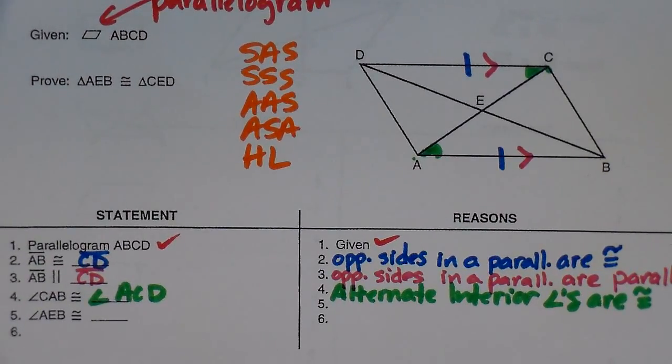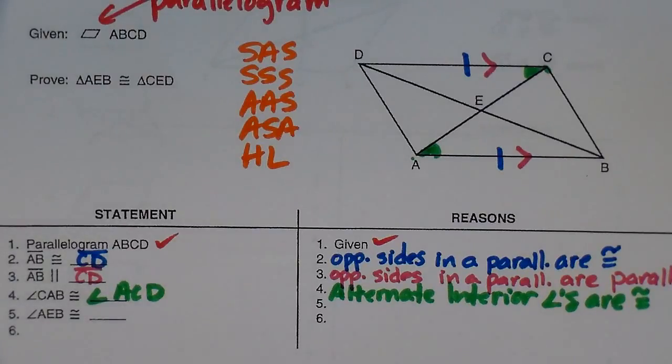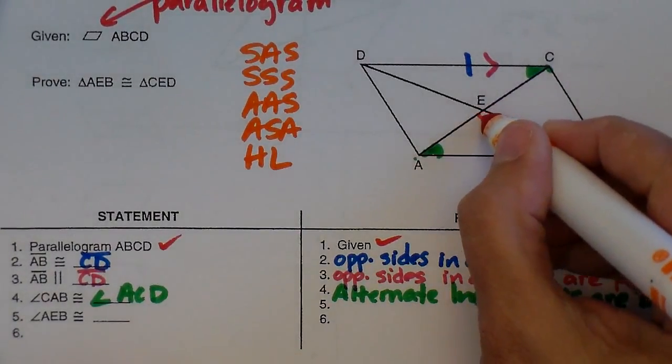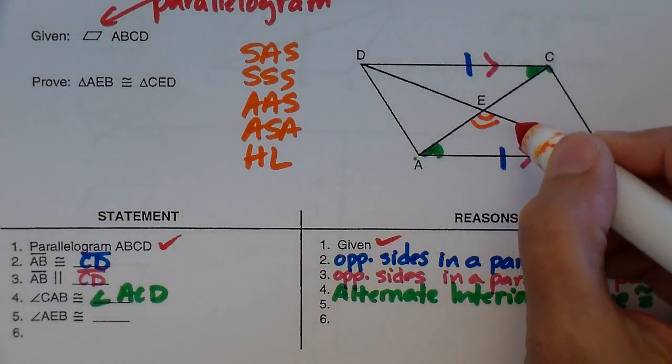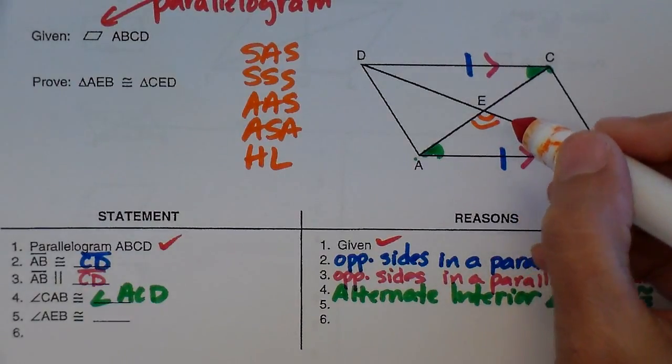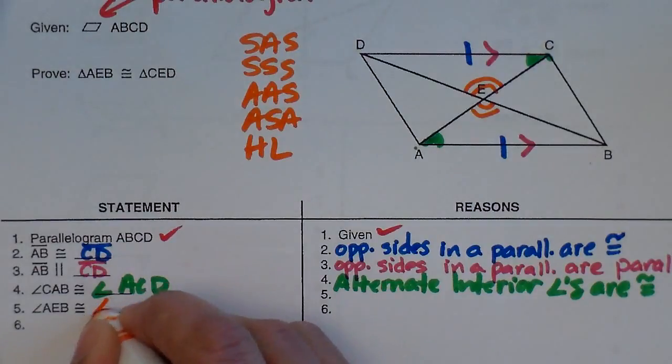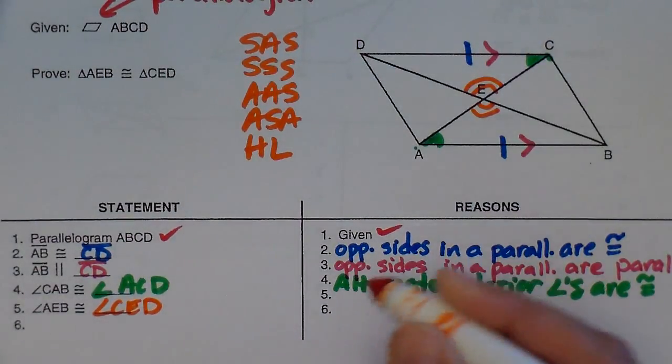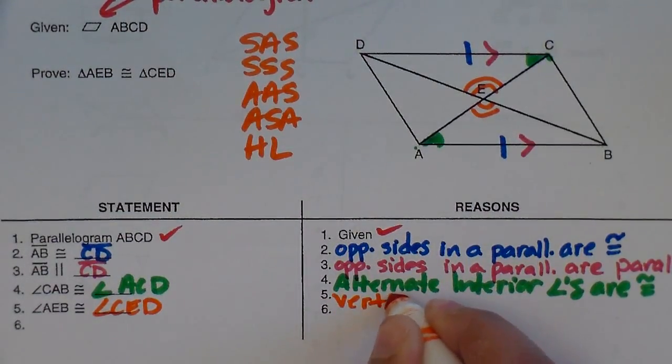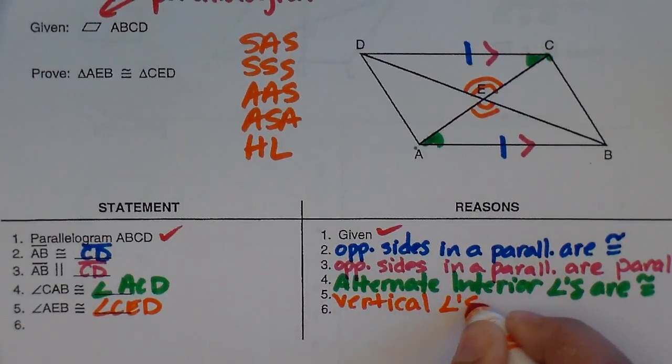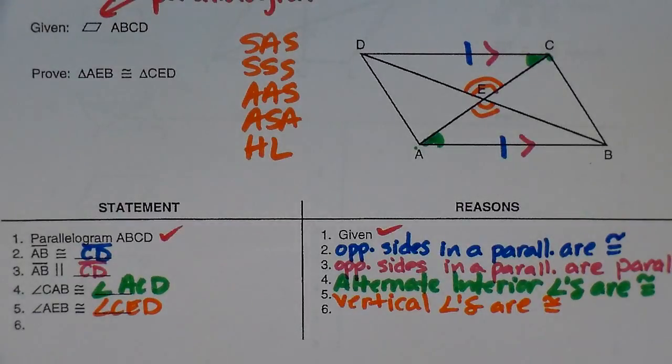I'm guessing this one says, let's look at angle AEB. That's this angle. What is angle AEB going to be congruent to? It's going to be congruent to CED. And the reason is because vertical angles. Vertical angles are congruent, which is the vertical angle theorem.